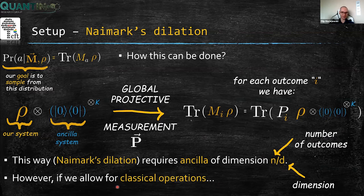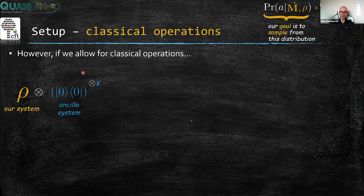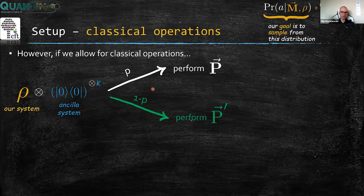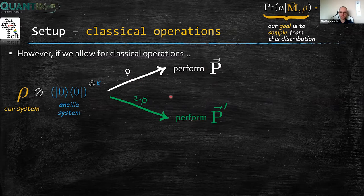However, if we allow for classical operations, the story changes. We have our system ρ and some ancillary qubits. Instead of performing a single projective measurement every time, in each experimental run we randomly choose whether to perform a white projective measurement P with probability p, or some other green projective measurement P prime. This is called randomization of projective measurements, and in this way we can effectively implement a POVM which is a convex combination of those measurements with those weights. Choosing which projective measurement to implement in each run is a purely classical operation, and of course there can be more than two measurements.